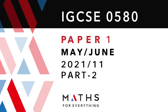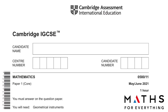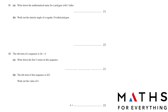Assalamualaikum, welcome to my channel. Today we are going to solve Cambridge IGCSE Mathematics Paper 1 Core Variant 1, May/June 2021, from question number 11 onwards. Before we start, do subscribe to my channel, and if I help you, do mention it in the comment section — it motivates me to do more. Let's start.